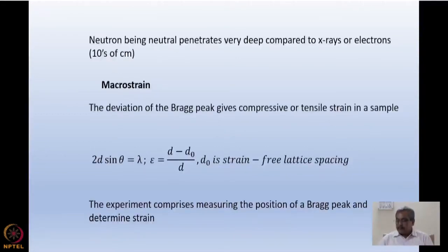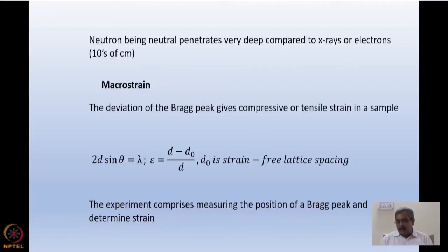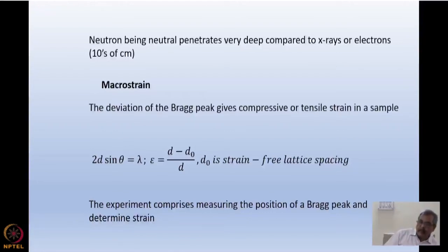Neutrons have a very big advantage because they can penetrate very deep. Comparing penetration depth: X-rays penetrate tens of microns and are absorbed very strongly; for electrons it is not even 100 Å before absorption. For neutrons this value goes to tens of centimeters.